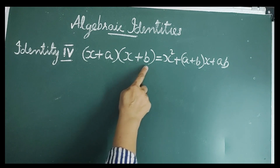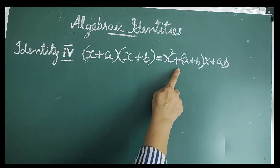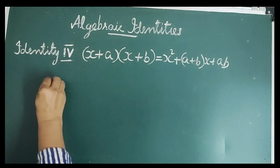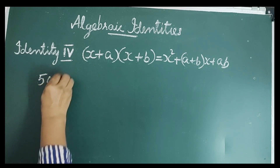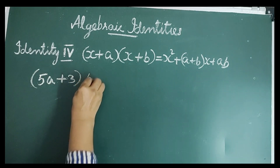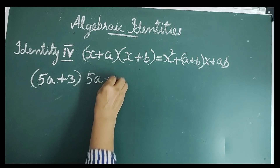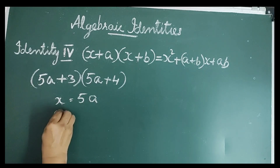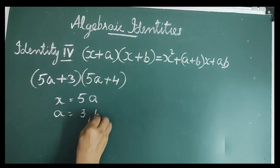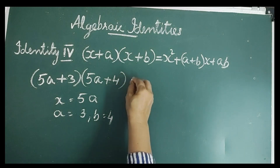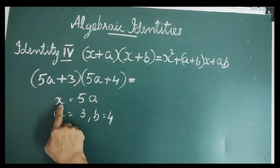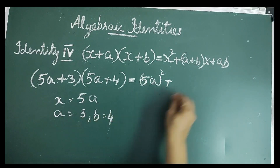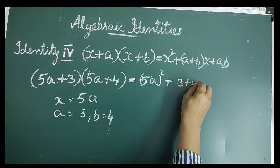The fourth identity is (x + a)(x + b) = x² + (a + b)x + ab. Let us consider an example: (5a + 3)(5a + 4). Here x = 5a, a = 3, b = 4. Then according to the identity: x² = (5a)², plus (a + b) = (3 + 4) multiplied by x = 5a.